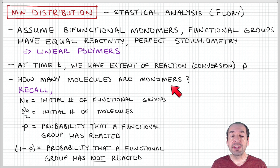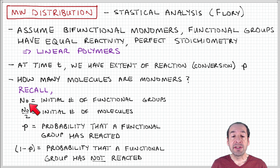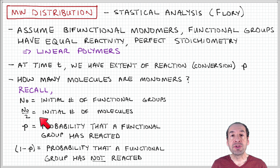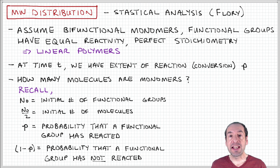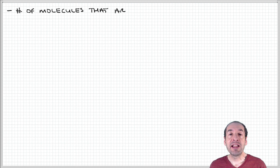For example, say we want to know how many molecules are monomers. Remember that we defined the parameter n0, which is the initial number of functional groups present in the sample. Since we have bifunctional monomers, the number of molecules initially present will be n0 divided by 2. The extent of reaction gives us the probability that a functional group has experienced a reaction, and it follows that 1 minus p expresses the probability that a functional group has not yet reacted and is therefore available to participate in a subsequent reaction.